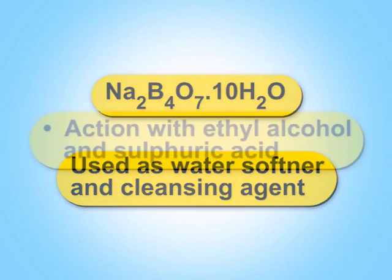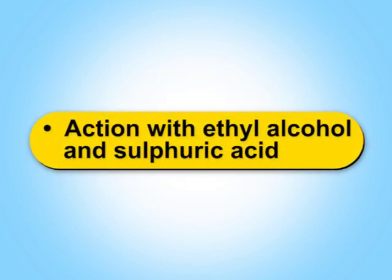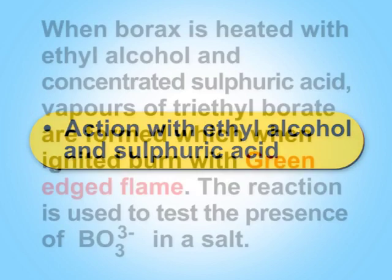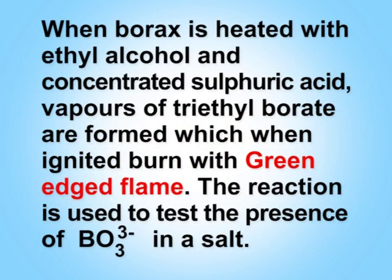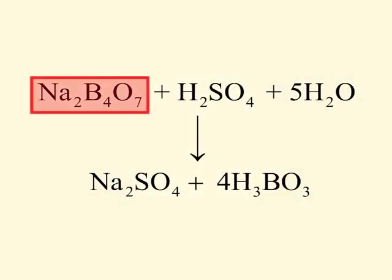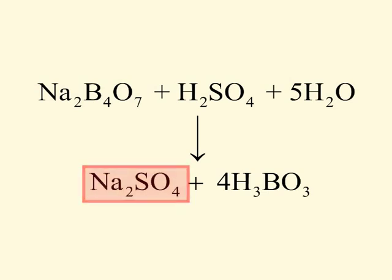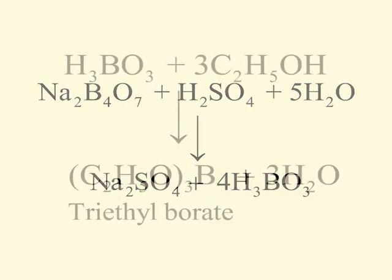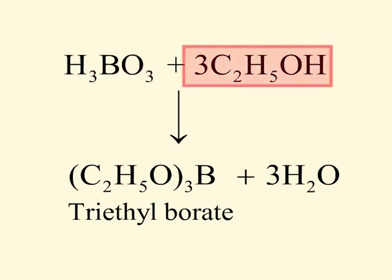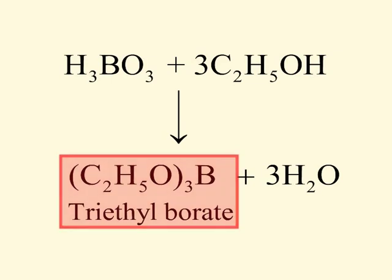Let us now learn about the action with ethyl alcohol and sulfuric acid. When borax is heated with ethyl alcohol and concentrated sulfuric acid, vapors of triethyl borate are formed, which when ignited burn with green edged flame. The reaction is used to test the presence of borate ion in a salt. Borax reacts with sulfuric acid and water to form sodium sulfate and boric acid. Boric acid reacts with ethyl alcohol to form triethyl borate and water.